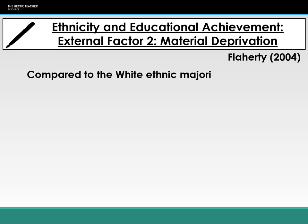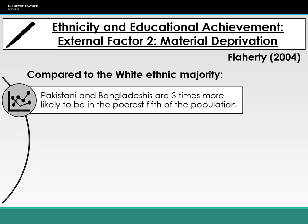The next factor is material deprivation, from Flaherty. Material deprivation refers to being unable to afford the hidden costs of education — uniforms, resources, trips — as well as how poor housing affects health and ability to study. Flaherty found that Pakistani and Bangladeshis are three times more likely to be in the poorest fifth of the population, living below the poverty line, meaning additional educational resources are unlikely to be affordable by these ethnic groups.